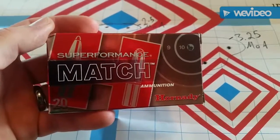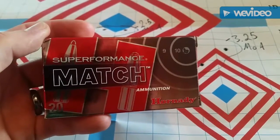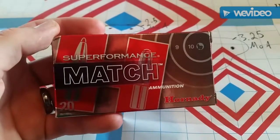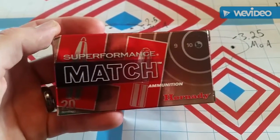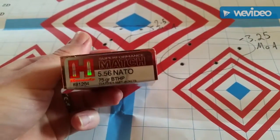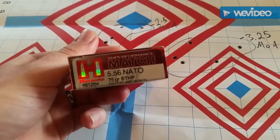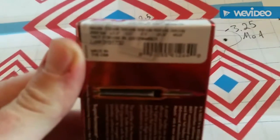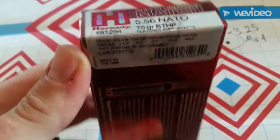They have a Super Performance line of bullets I think for more hunting purposes. They also have a Match line of bullets which obviously is for high accuracy match performance. But a Super Performance Match I guess is supposed to be extremely fast and extremely accurate.